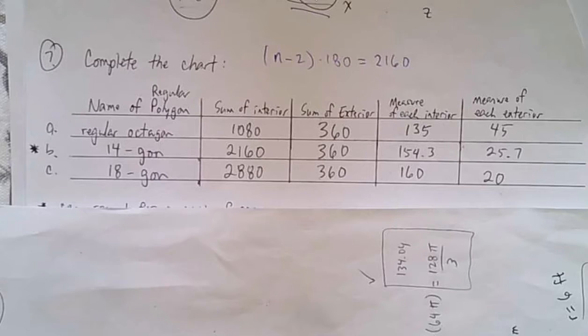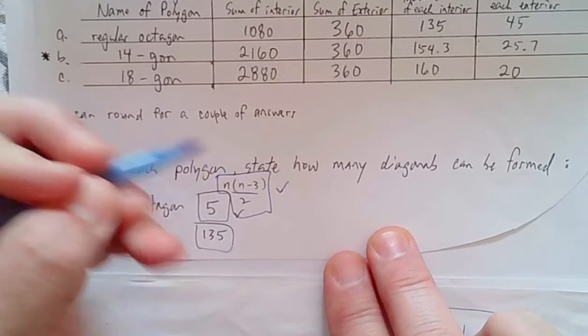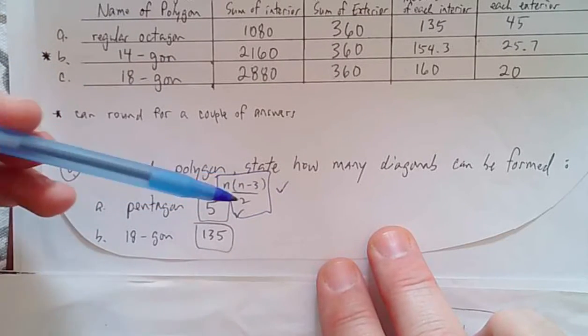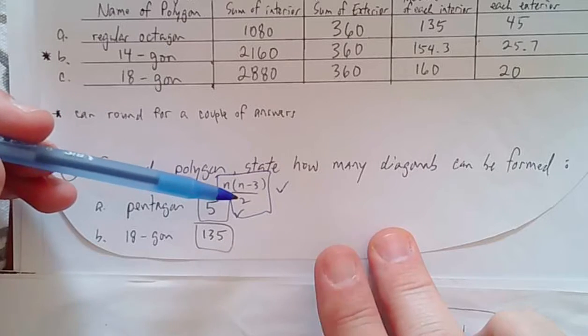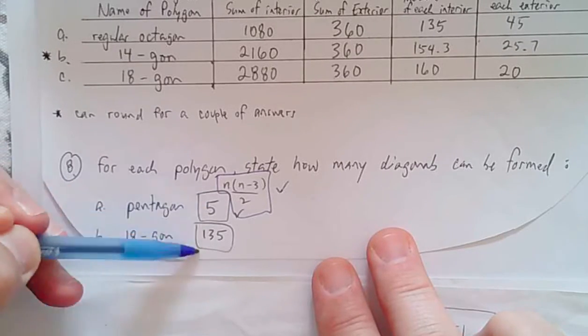Anyway, those were the answers for number 7. And at the bottom, the formula for the number of diagonals is n(n-3)/2. That was really not in your book, but I did tell those who were at the virtual class the formula for finding the number of diagonals. And if you fill it in, you get these two answers.